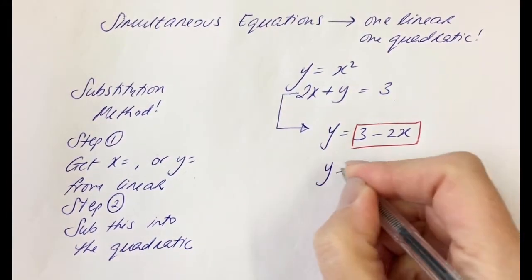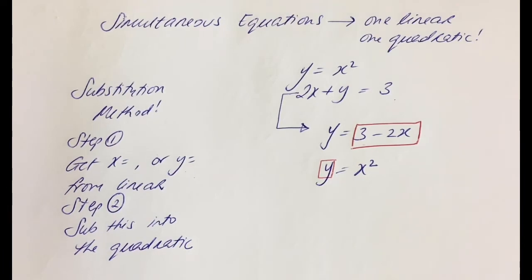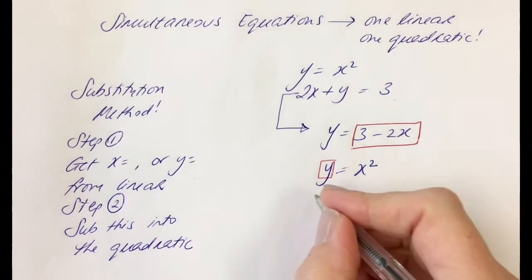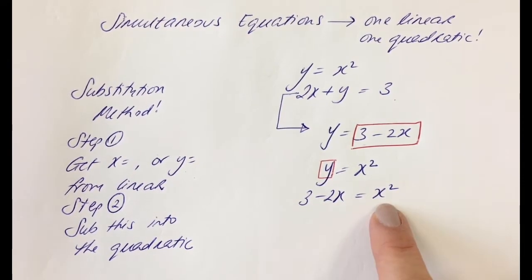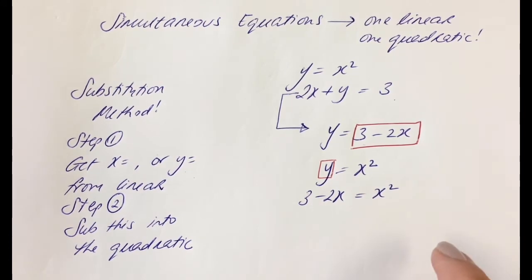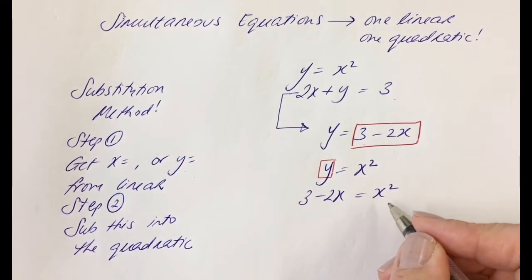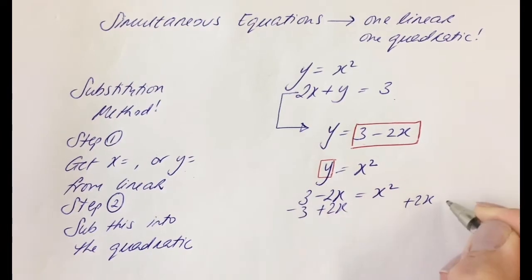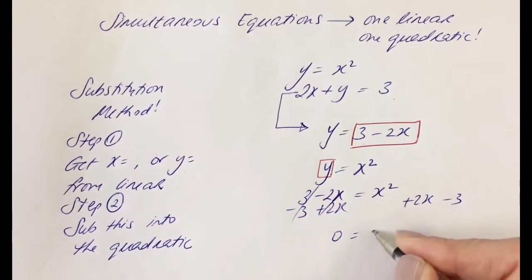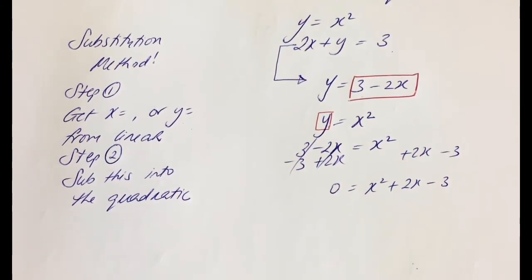Since y is equal to 3 minus 2x, in the quadratic y equals x squared, I'm going to substitute in what y equals. So instead of y equals x squared, it becomes 3 minus 2x equals x squared. Now we have a quadratic, but we would normally have it written as something x squared plus something x plus something equal to 0. So rearranging - adding 2x to both sides and taking away 3 - gives us x squared plus 2x minus 3 on the right, equal to 0.